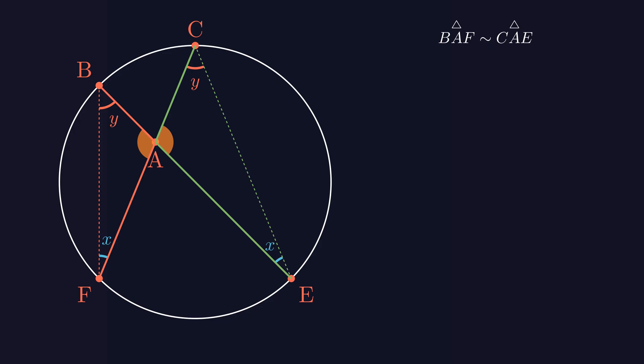In similar triangles, the sides opposite the same angles are in proportion. For example, in the red triangle, the side opposite angle X is AB. In the green triangle, the side opposite angle X is AC. Their ratio is equal to the ratio of the sides opposite angle Y in each triangle. When you do cross multiplication, you'll see that the products of the line segments are equal.